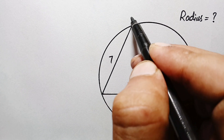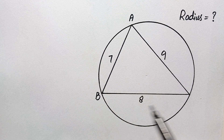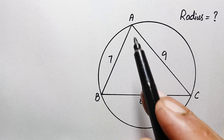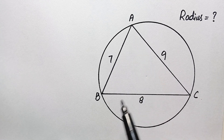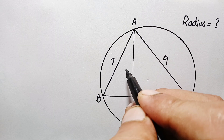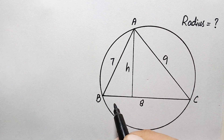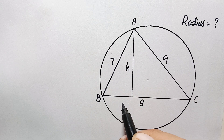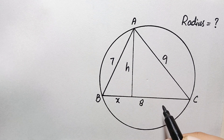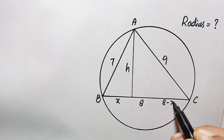First of all, let us suppose this is our triangle ABC — point A, point B, and point C. Now we will draw a perpendicular from point A to the line segment BC. Let us suppose this is the height h of this triangle. This total length BC is 8 units. Let us suppose this length BD is equal to x units, so the remaining length DC will be 8 minus x units.